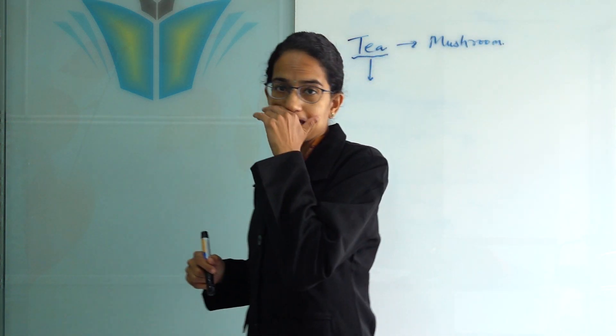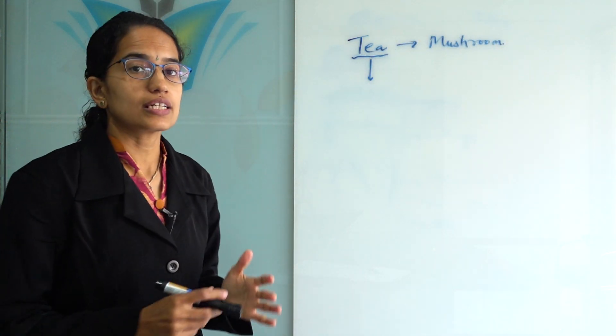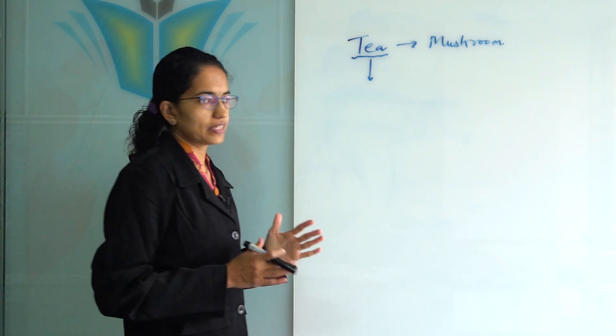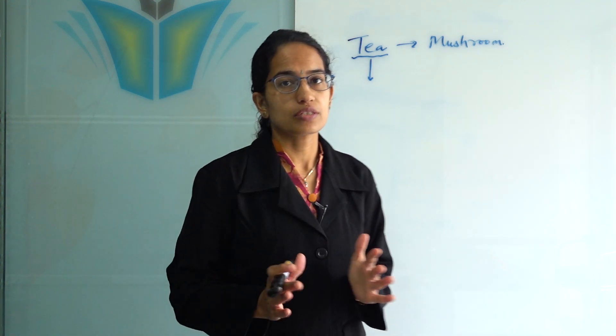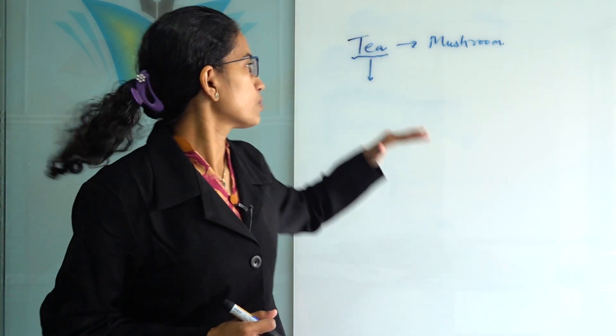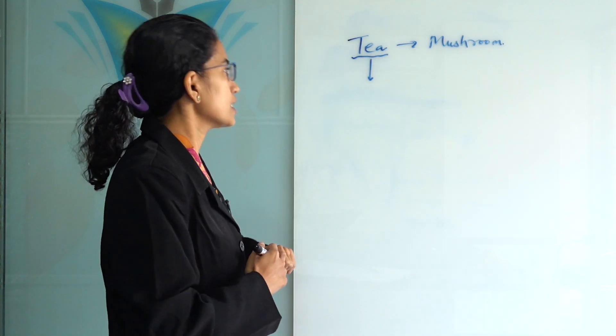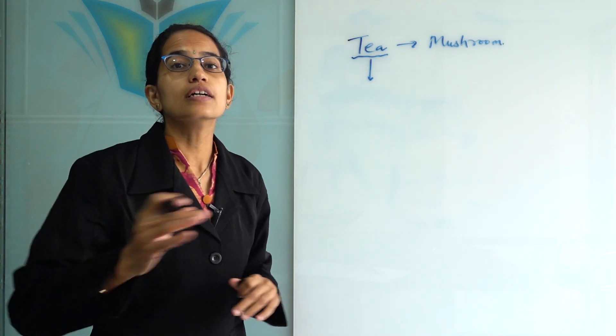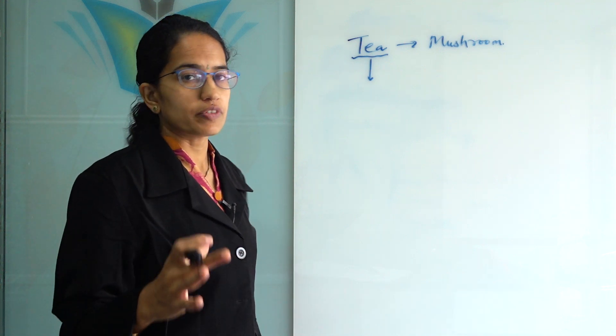West Bengal has seen a transition from tea plantation to mushroom cultivation. Let's understand the pros and cons. Tea plantation was one of the most prominent cultivation types in the regions, predominantly the Duar areas of West Bengal.